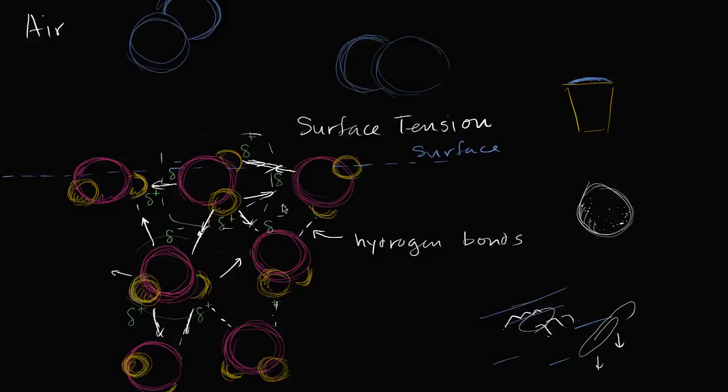So surface tension, it is really due to the cohesion of the water. Remember cohesion is when the molecules are attracted to each other, especially because they're more attracted to each other than the surrounding air.